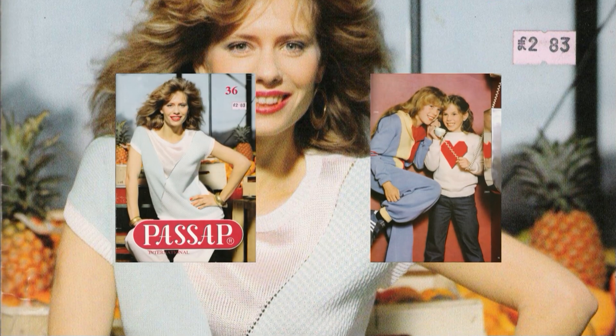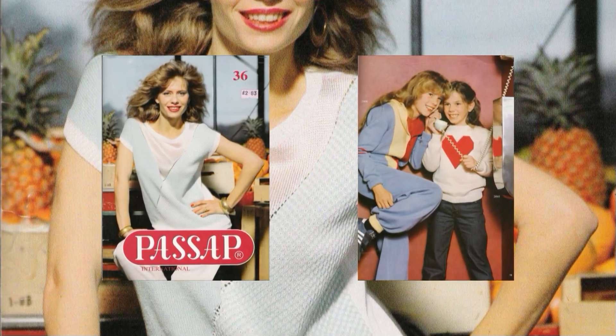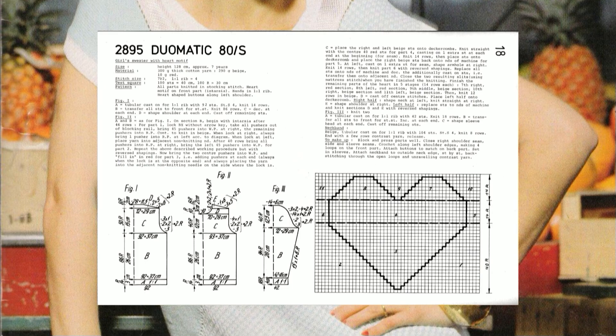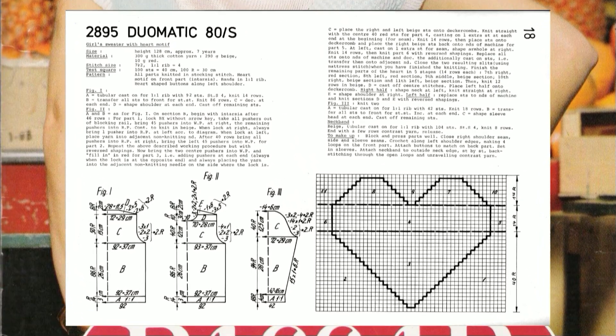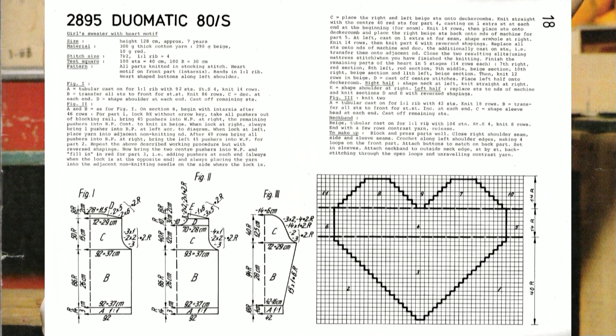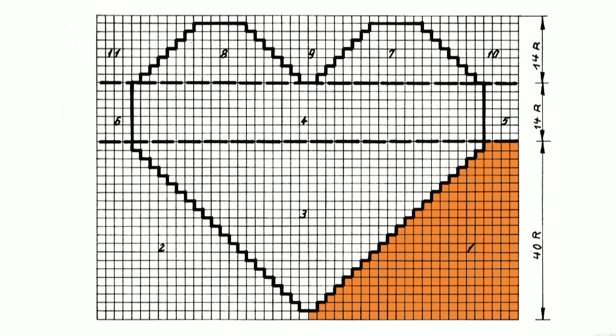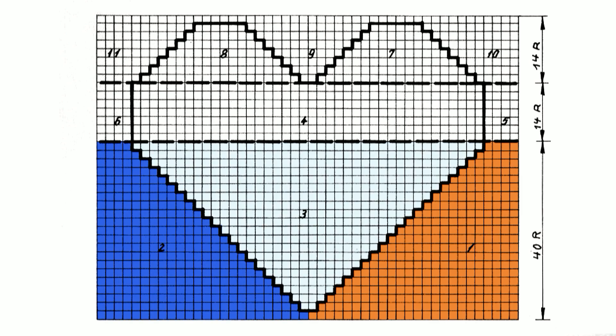In my previous video, I knitted the red heart motif from the 36 tissue of Pass Up magazine using the Pass Up block and the pushers. To make that possible, I had to divide a heart into 11 different sections and knit each one of them separately.